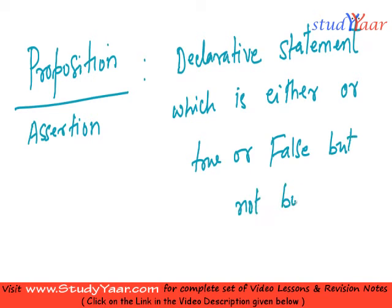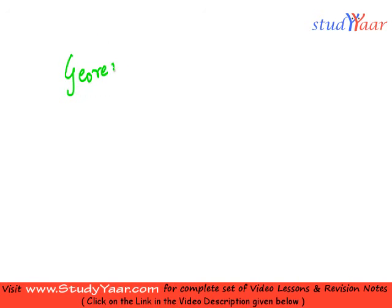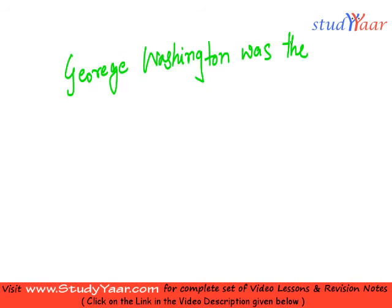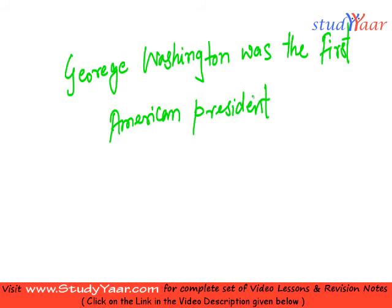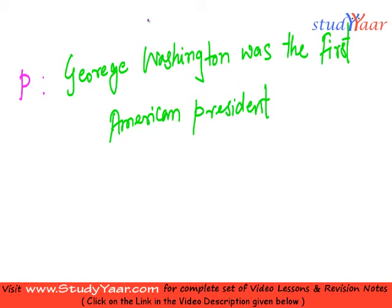For example, consider the statement: 'George Washington was the first American president.' Is it an assertion? It is indeed an assertion because it is correct that George Washington was the first American president. We can call this statement P, and P is a proposition which stands for that statement. We know that P is true.